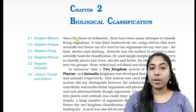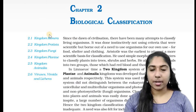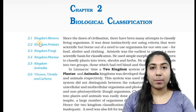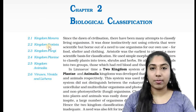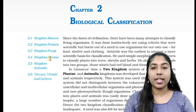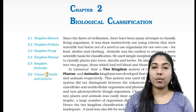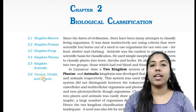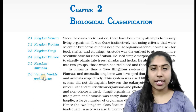In this chapter we have six headings: Kingdom Monera, Kingdom Protista, Kingdom Fungi, Kingdom Plantae, and Kingdom Animalia. We have six headings here.